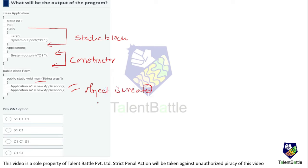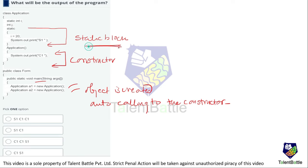When the constructor is called automatically, a1 is created so the constructor will be called giving C1, then a2 is created giving C1 again, and you might think the static block runs last giving output C1, C1, S1. However, the actual case is that the static block has higher priority than the constructor block.